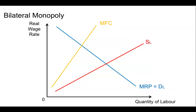the monopsonist then has to pay all the other people that it's already hired a higher wage. And so therefore the marginal factor cost — the cost of all their wages — is going to be higher and higher the more workers you employ. The profit-maximizing monopsonist will then decide they want to employ the number of workers where the marginal factor cost equals the marginal revenue product. That's at this point here, and they will therefore hire L0 number of workers.